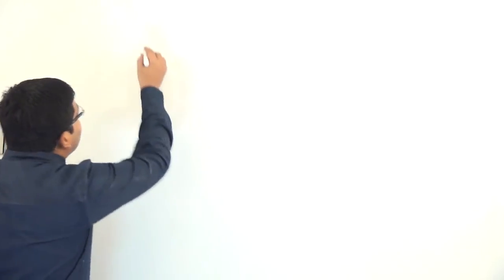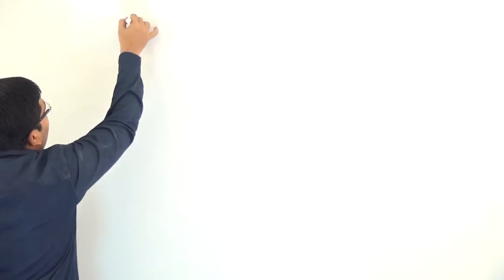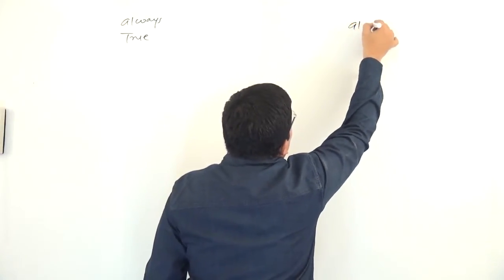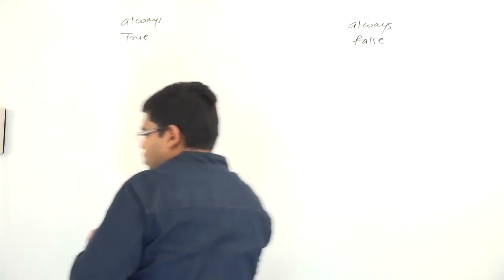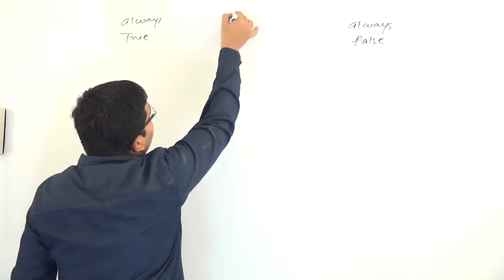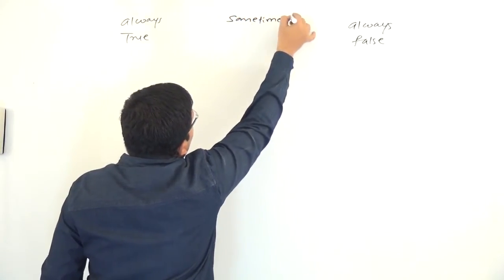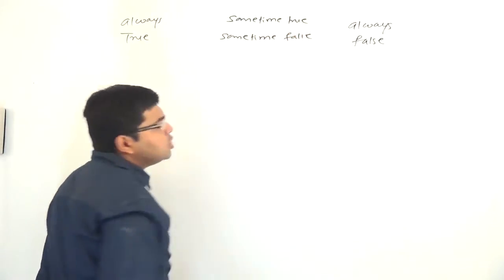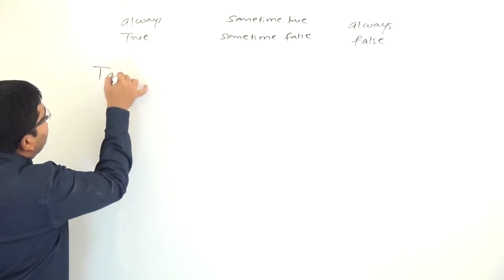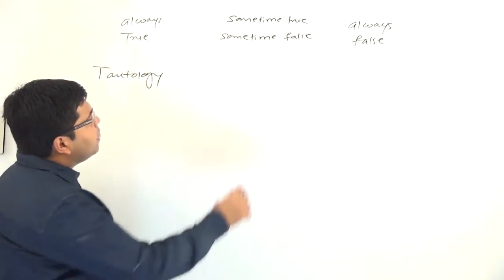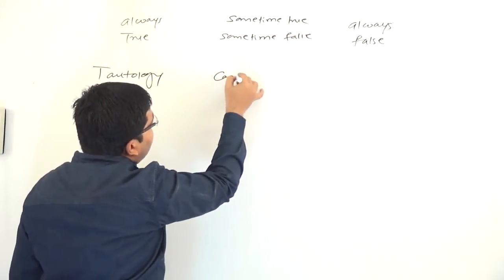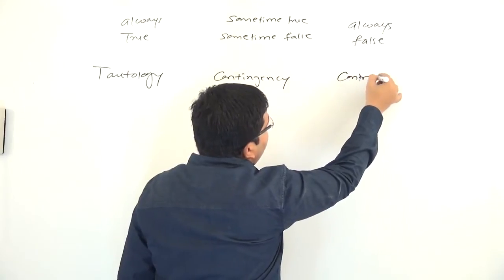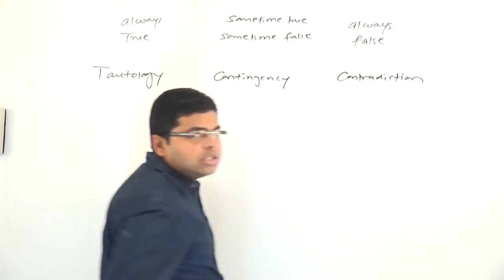Every formula can fall into one of three categories: it can be always true, or it can be always false, or it can be sometimes true and sometimes false. The always-true category is called a tautology. The sometimes-true, sometimes-false category is called a contingency or contingent formula. And the always-false type is called a contradiction.